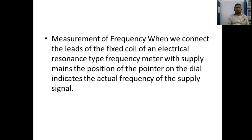When we connect the leads of the fixed coil of an electrical resonance type frequency meter to the supply mains, the position of the pointer on the dial indicates the actual frequency of the supply signal. The fixed coil attracts the moving coil, and whatever supply frequency we connect, it will show the corresponding frequency on the calibrated dial.